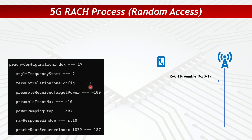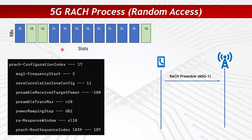The next point is determining which preamble format to use, which comes from the PRACH configuration index. This index refers to a table in 3GPP and tells the UE where in the time domain the RACH preamble needs to be sent. If there are multiple slots, it specifies which slot will carry the RACH preamble — for instance, it may indicate the preamble is sent in a particular slot.